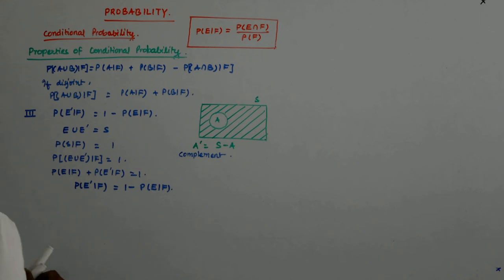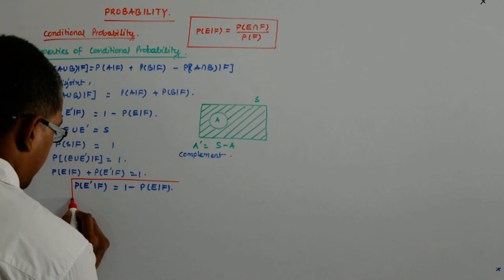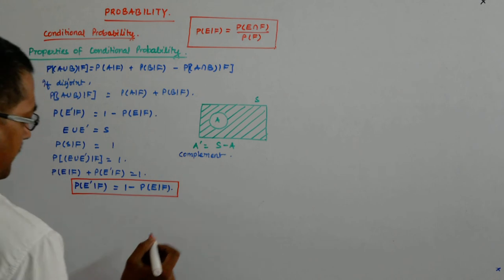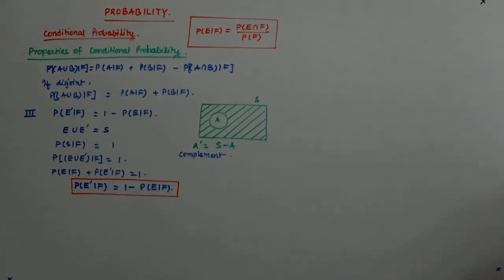This is the third property. That is the third property. We can now solve a question or two before we go to the next topic.